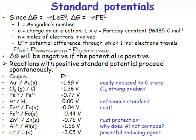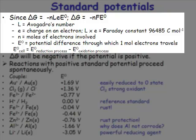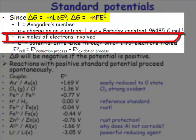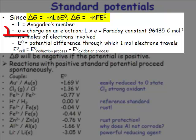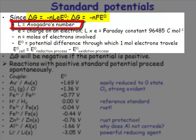How do you relate reduction potentials to free energy changes? We have a relatively simple formula: Delta G, the free energy change, is equal to minus nFE°cell. N is the number of electrons involved, E is the charge on the electron, and L is Avogadro's number.